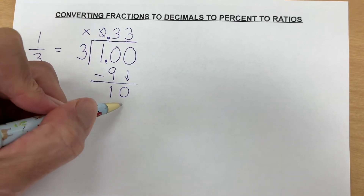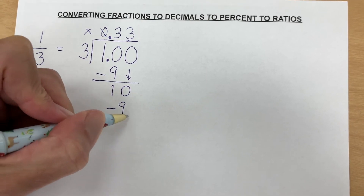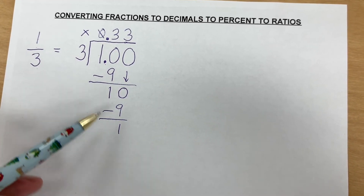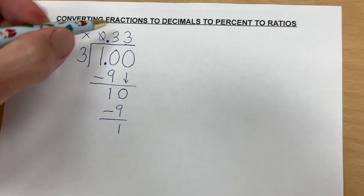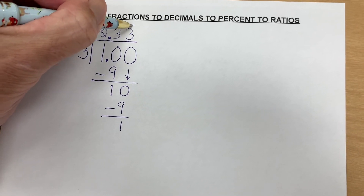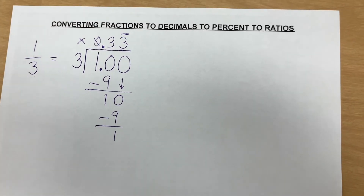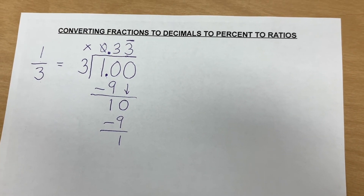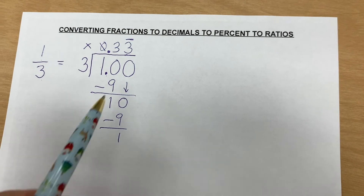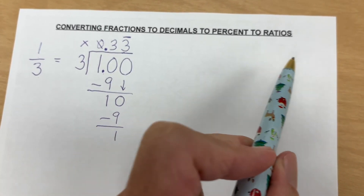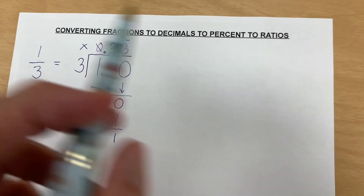Three times three is nine again — do you see that? It's going to repeat again. So what we do is we put a line over the top; that means it's a repeating number. If we keep going it'll be three, three, three, three — all the way down.